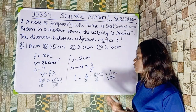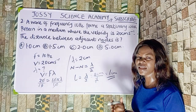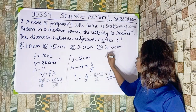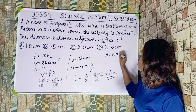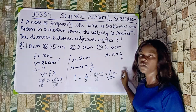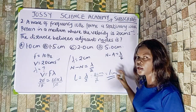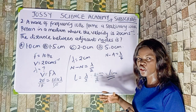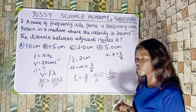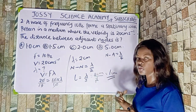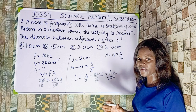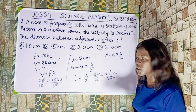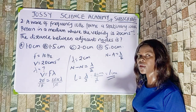In case you have to find the distance between a node and antinode, the distance between them is lambda over 4. But if it is between adjacent nodes or adjacent antinodes, the distance between them is lambda over 2, which is what we used to solve this problem. The correct option to this question is option A.